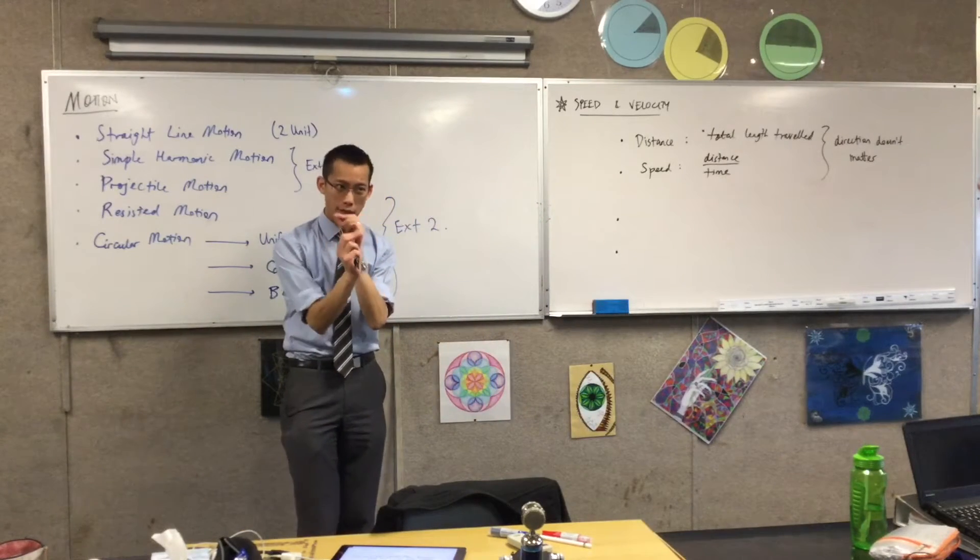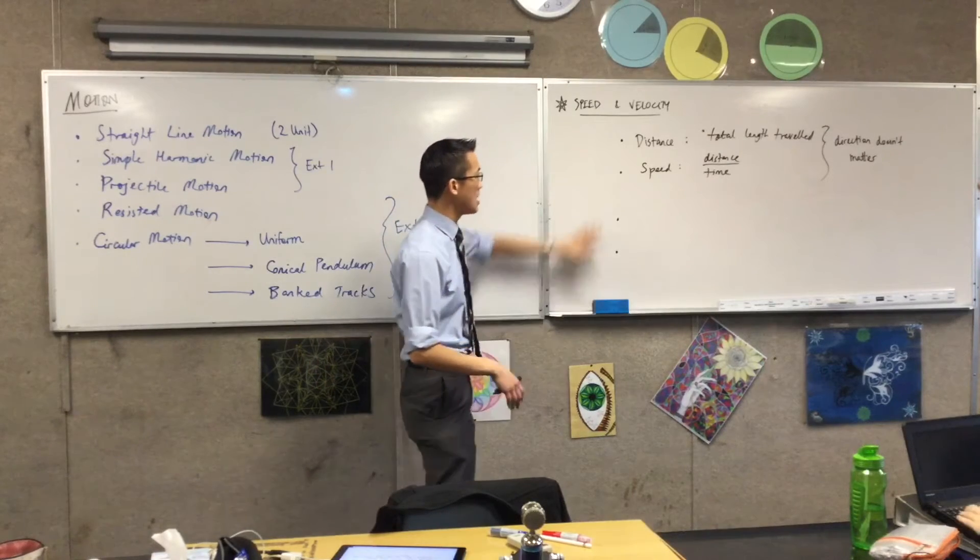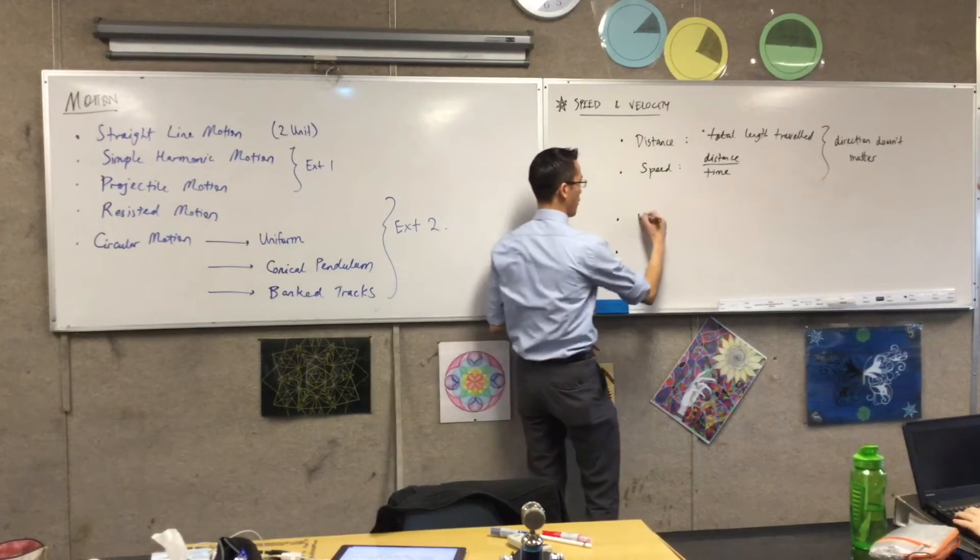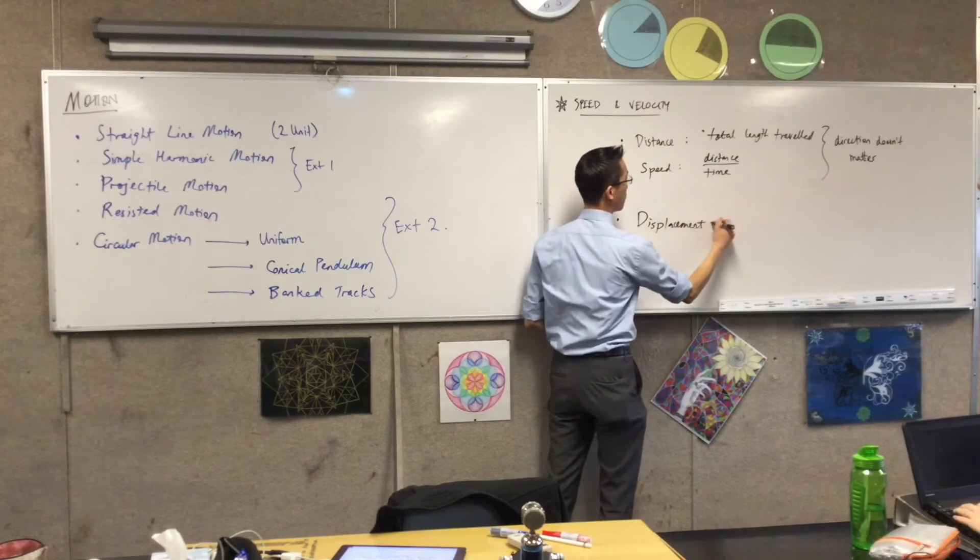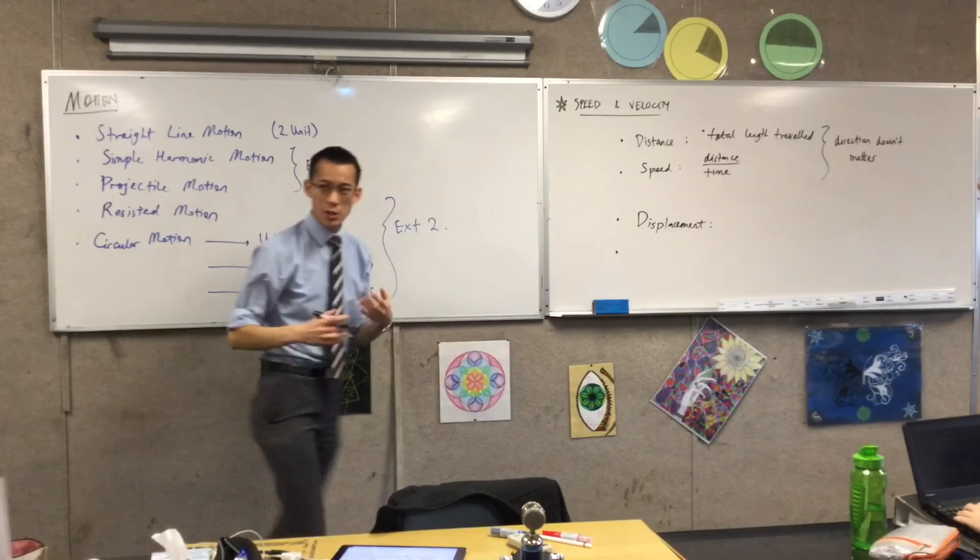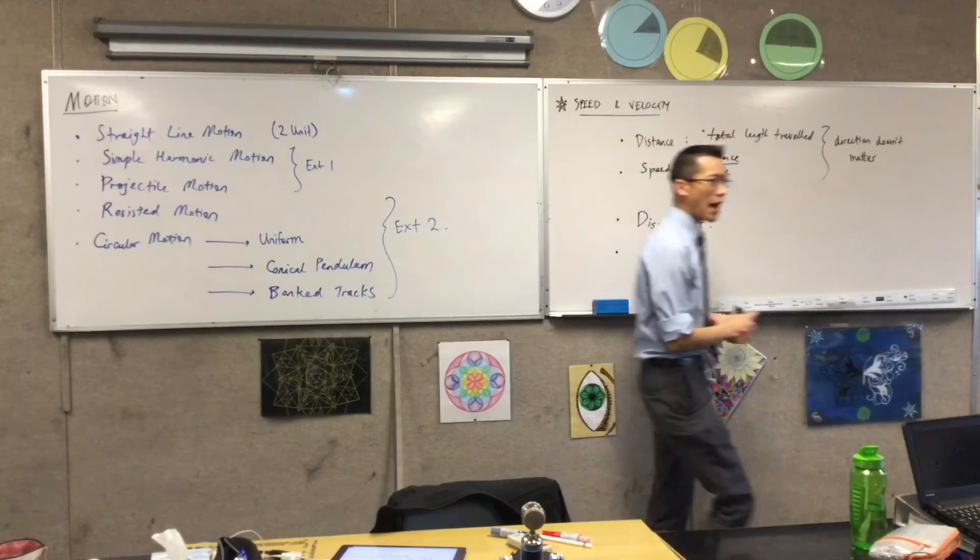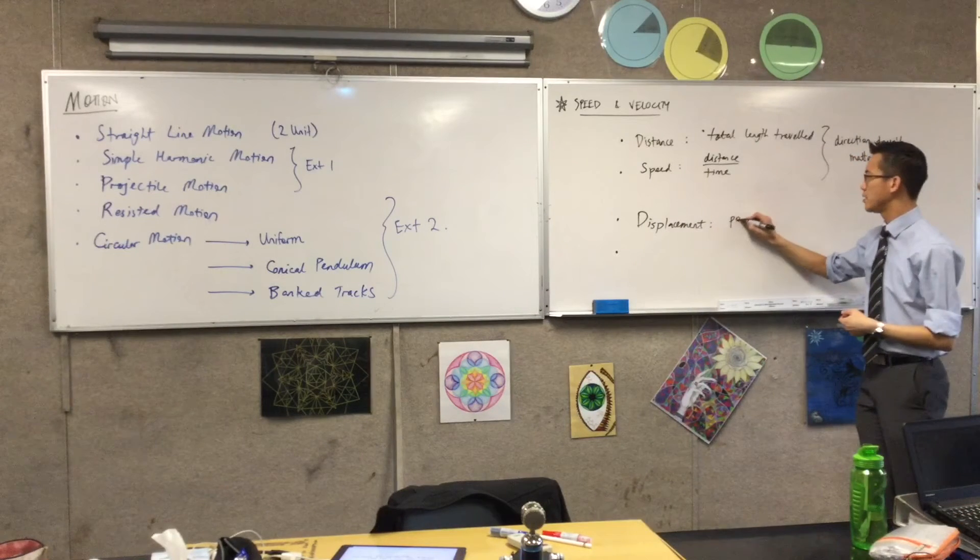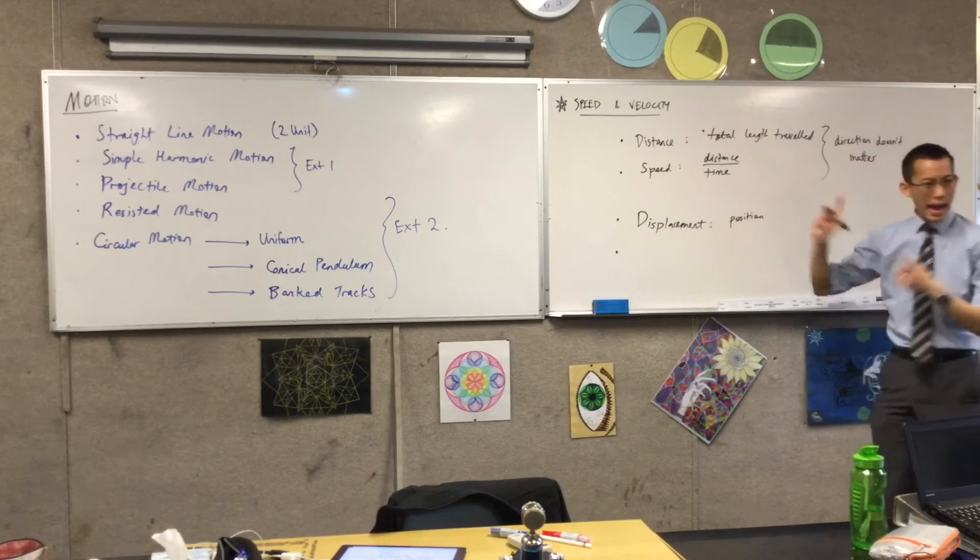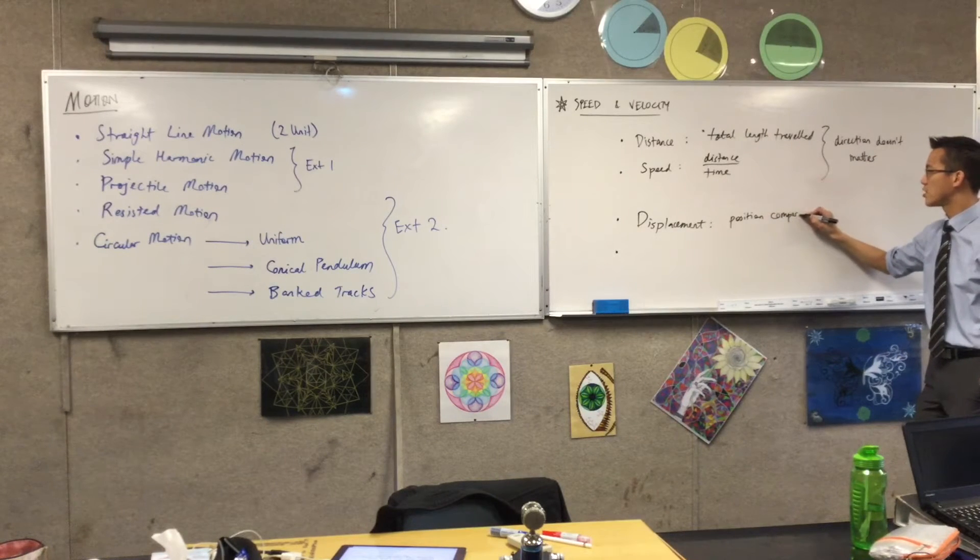But we want to be a little finer with this, and we have mathematics to understand direction. So if you add direction to distance, very connected idea, and I've already named it, we call this displacement. So displacement is obviously connected to distance, but like I said, it's more about position. I would describe displacement as position as compared to where you started, position compared to starting point.